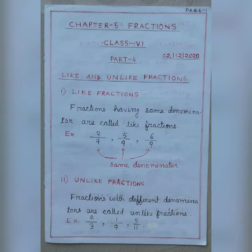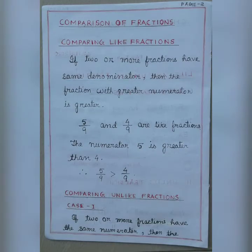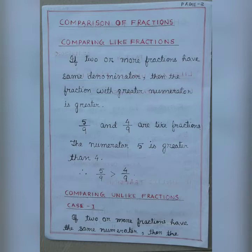Unlike fractions are fractions with different denominators. If the denominators are different, the collection of fractions is called unlike fractions. Now the next topic is comparison of fractions — how to compare like fractions and unlike fractions. Since like fractions have the same denominator, if two or more fractions have the same denominator, then the fraction with the greater numerator is greater. For example, 5 by 9 and 4 by 9 are like fractions; since 5 is greater than 4, therefore 5 by 9 is greater than 4 by 9.